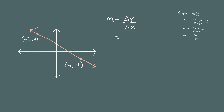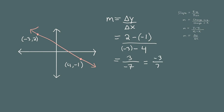For the change in y, we take the difference between the two y coordinates: 2 minus (-1). Do be careful with the negative signs — 2 minus negative 1 is in the numerator, and we divide by the difference in the x coordinates: -3 minus 4 in the denominator. So 2 minus (-1) is positive 3, and -3 minus 4 is -7. The slope of this line is 3 divided by -7, which is -3/7.